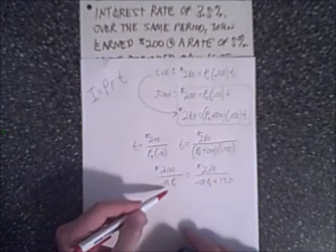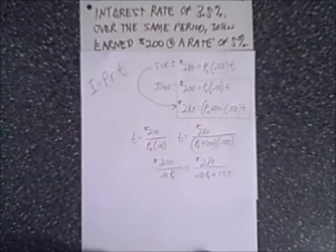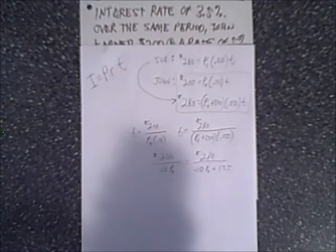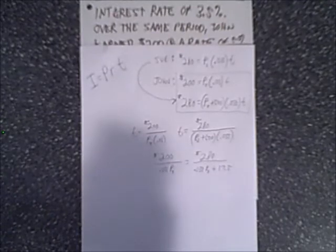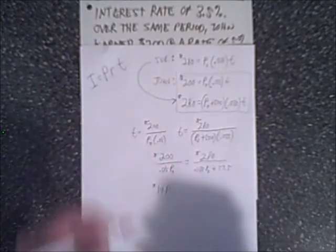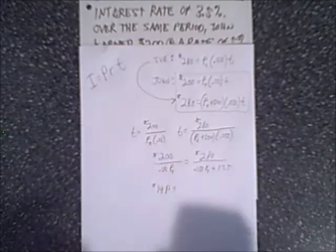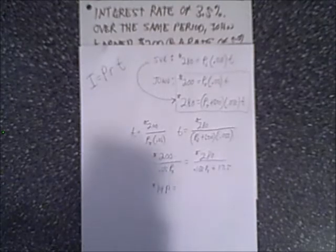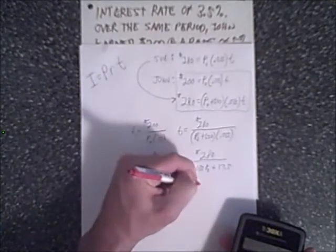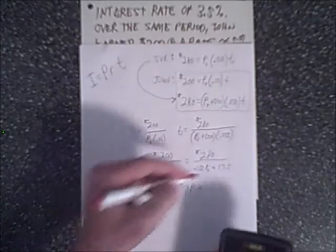So we're going to have $200 over 0.05 PJ is equal to $280 over 0.035 PJ plus 0.035 times 500. 0.035 times 500 is 17.5. And lastly, we can take this and let's cross multiply. We have our two equations, and let's solve for P.